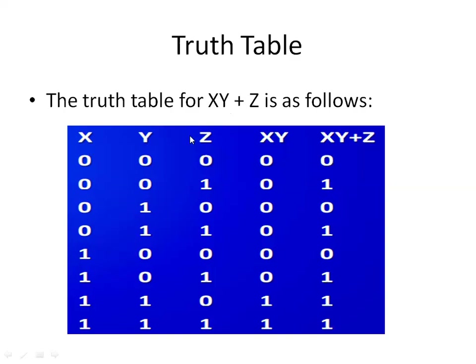We first give the values of X, Y, and Z. The eight combinations are: 0 0 0, 0 0 1, 0 1 0, 0 1 1, 1 0 0, 1 0 1, 1 1 0, and 1 1 1.